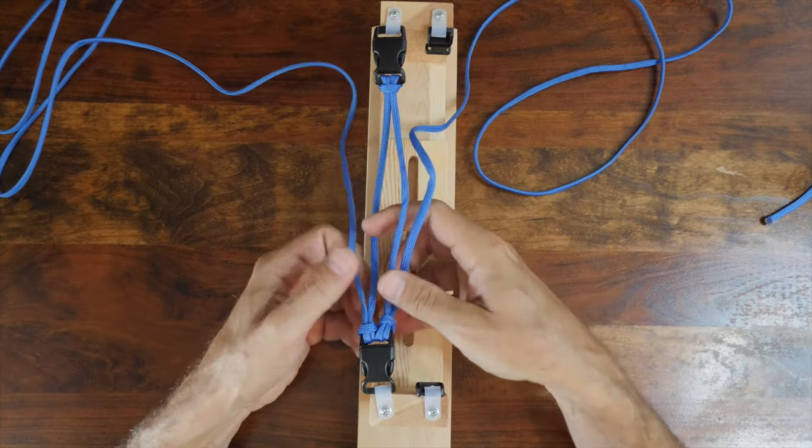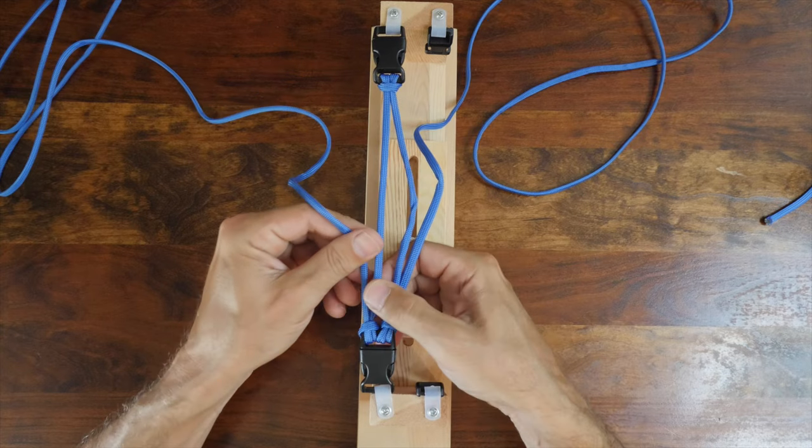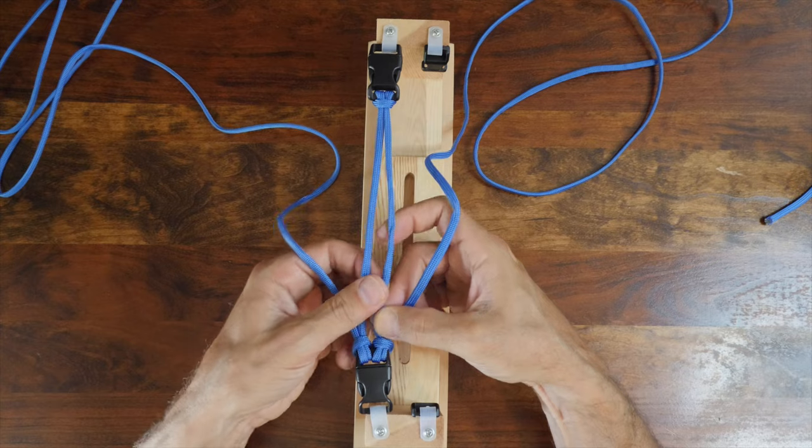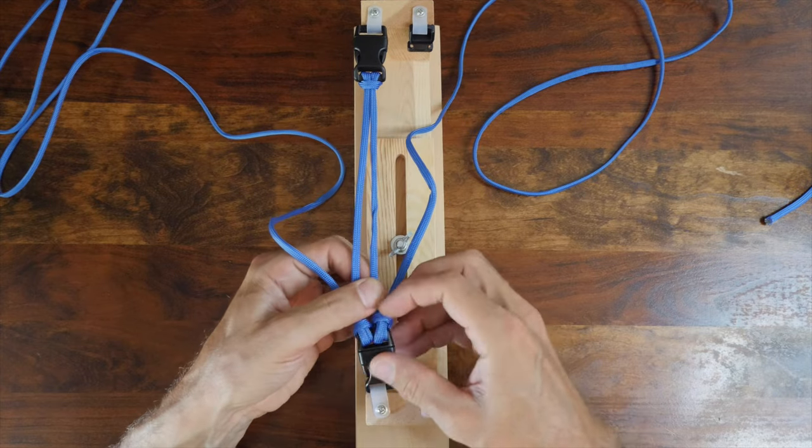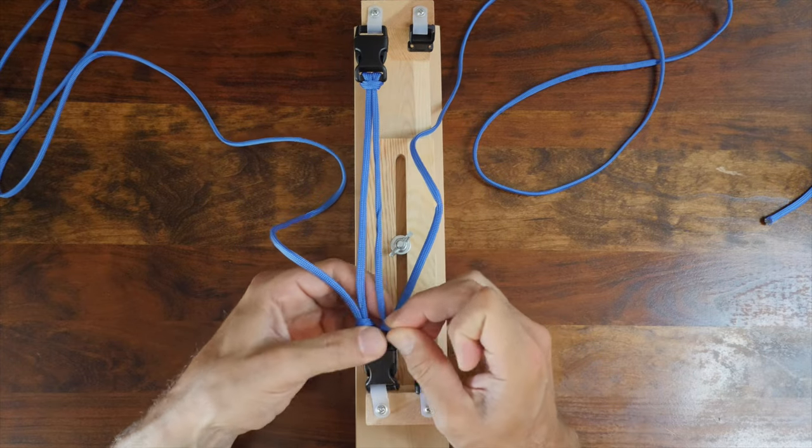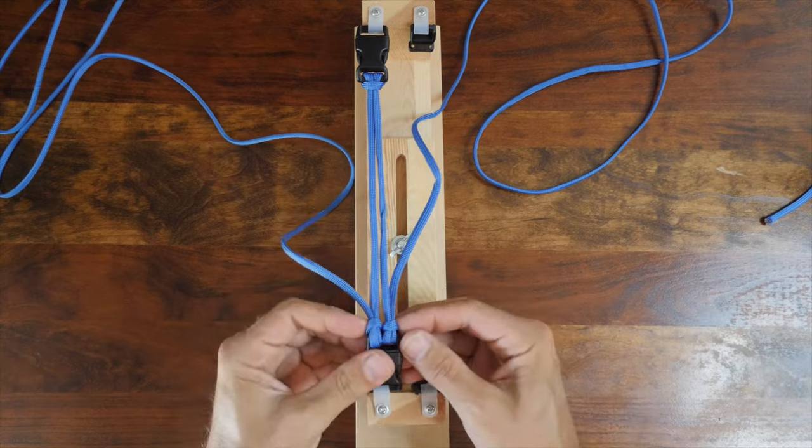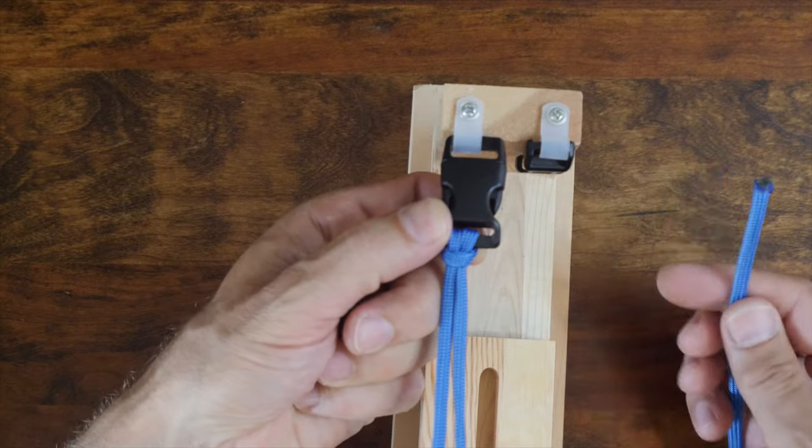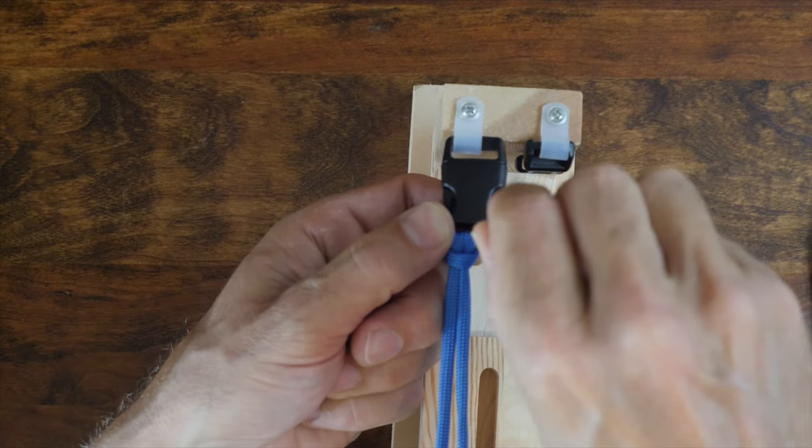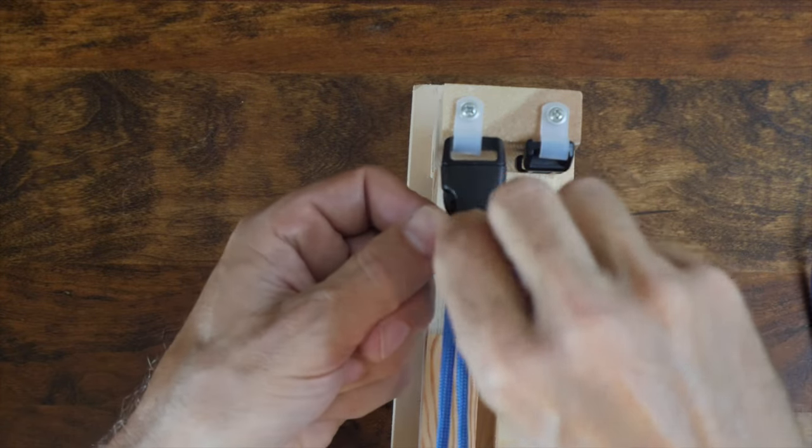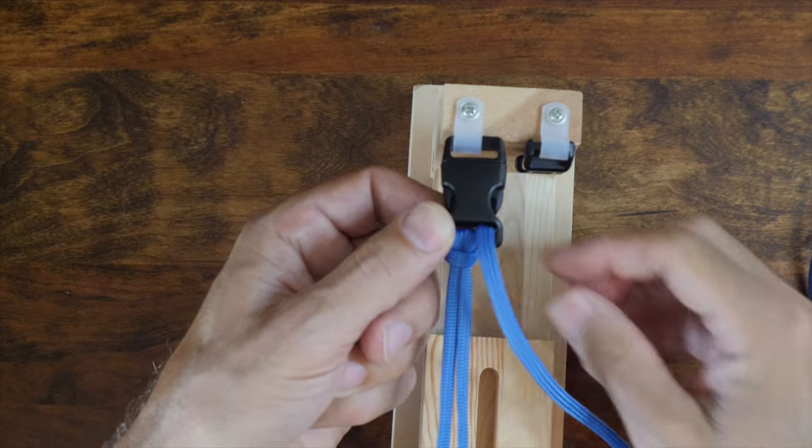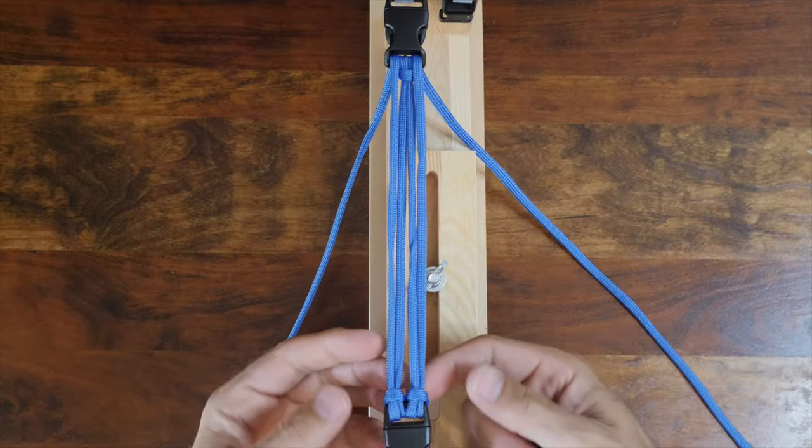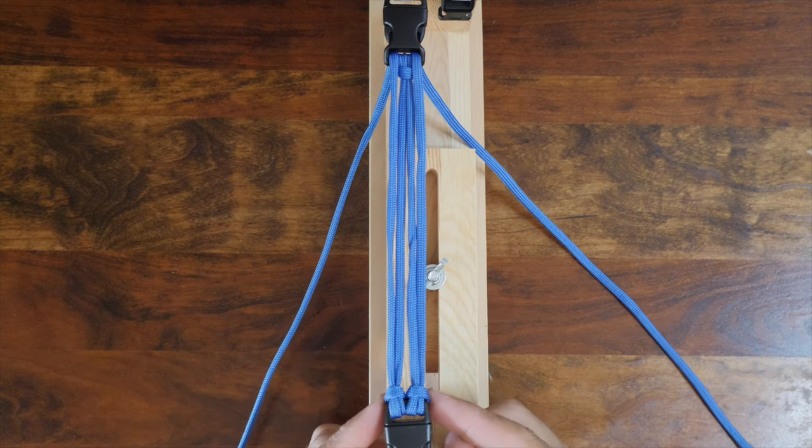Once you have your working end through the clasp, adjust the line and cinch up your knot. You probably want to also adjust the tension of your lines so that they're equal on both sides. Next, we'll bring both of our lines up and pass them through the top clasp one more time, passing the cordage again through the top side of the clasp. At this stage, your paracord bracelet setup should look something like this.